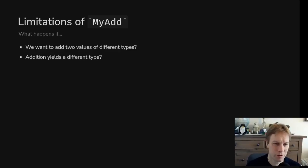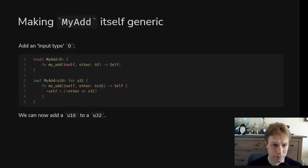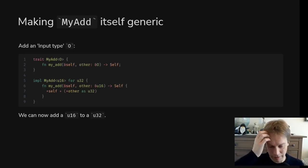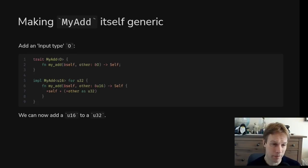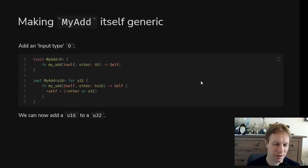What we can do is make the trait itself generic. Up until now we've made the function generic, but now we're saying the trait — the thing that defines what those types can do — can itself have a type parameter. Here's how we would do this: we're using the letter O, which stands for 'other', and when we defined our trait before we just said there was a myAd function without a type parameter. Now we've got this type parameter O.